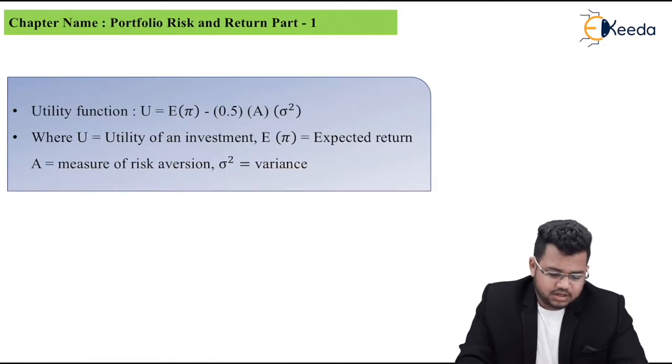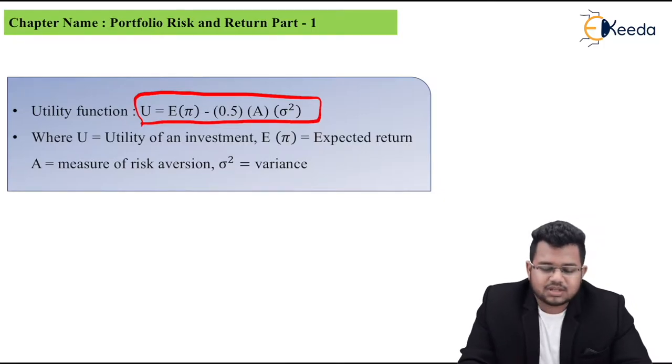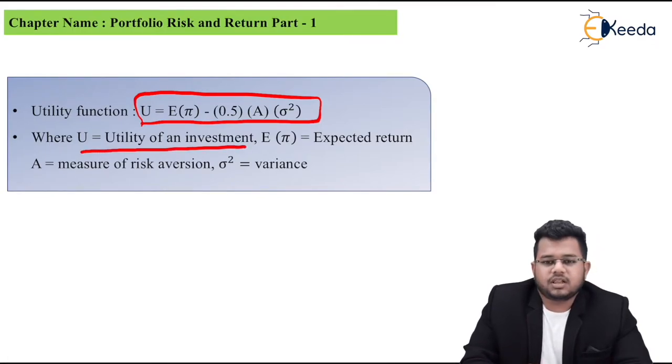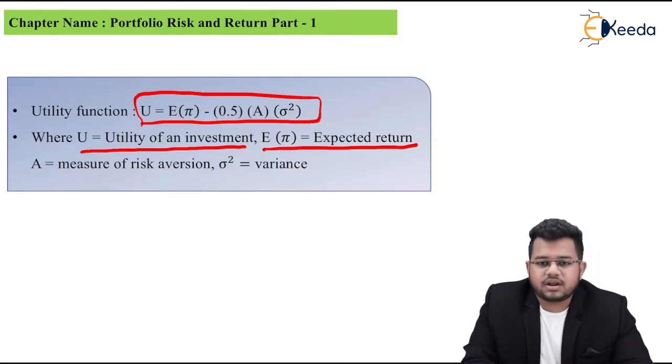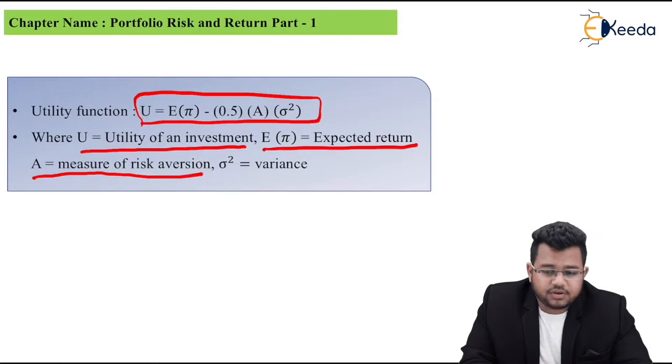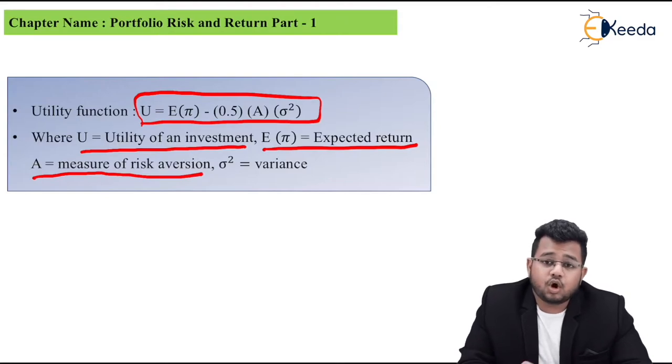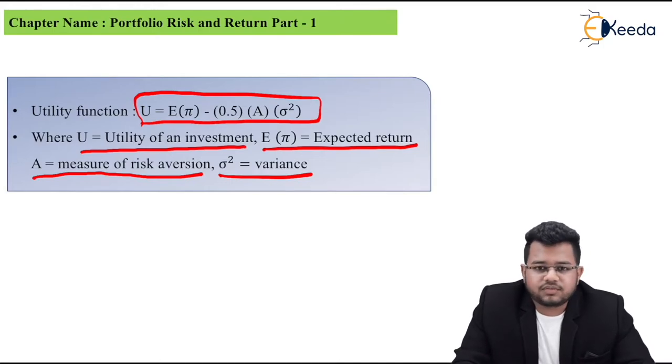Utility function is U equal to ER minus 0.5 into A into Sigma square. U is the utility of an investment. ER is expected return out of that investment. 0.5 is constant, it's always in the formula. A is the measure of risk aversion, the risk aversion coefficient. Sigma square is the variance of the returns of that investment.